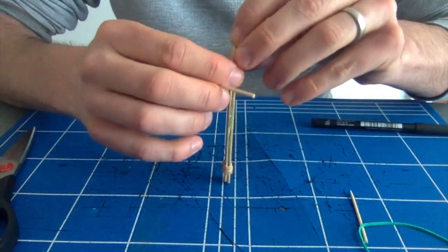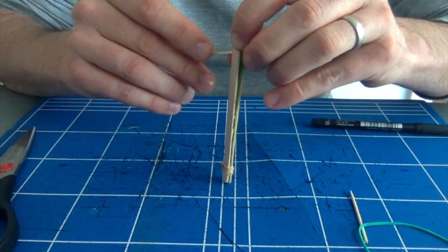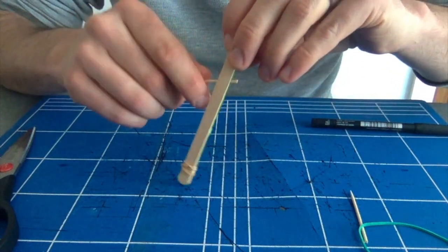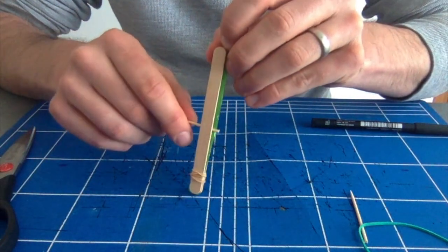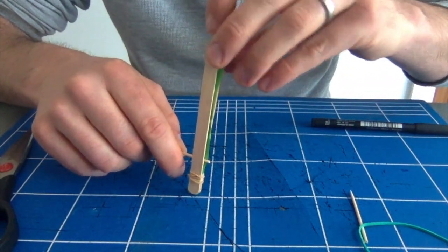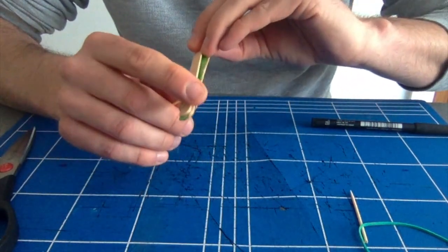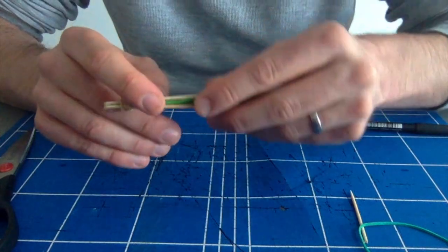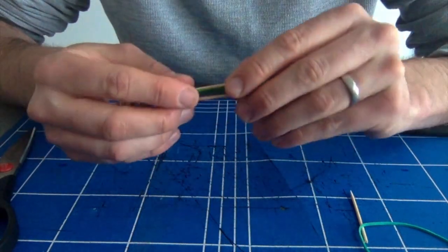Then what we're going to do is take our toothpick and slide it in one side of the paper, making sure that we don't damage the paper and keep it flat.